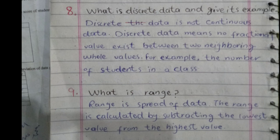The eighth question: What is discrete data and give its example. Discrete data is not continuous data. Discrete data means no fractional value exists between two neighboring whole values. For example, the number of students in a class.